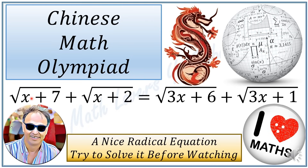The equation is: square root of (x plus 7) plus square root of (x plus 2) is equal to square root of (3x plus 6) plus square root of (3x plus 1). Please try to solve it before watching the video and let me know what you think in the comment area.